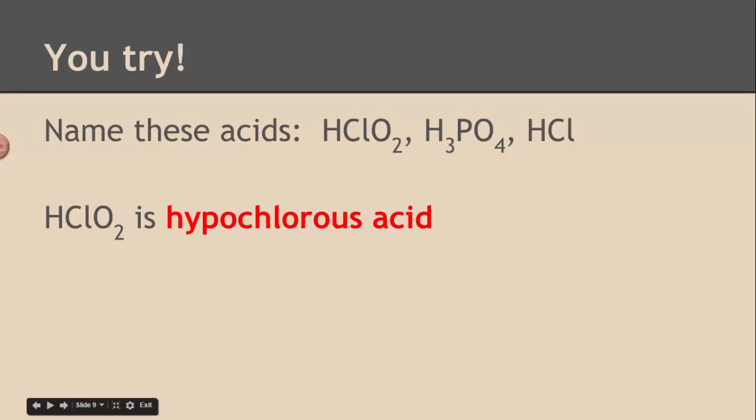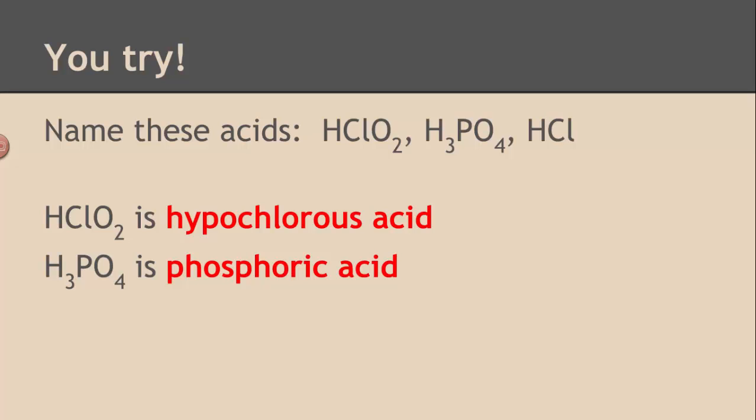HClO2 is called hypochlorous acid, because the ClO2- ion is the hypochlorite ion. H3PO4 is called phosphoric acid. Now, phosphic is what you might have, and that's okay, but remember phosphorus and sulfur, sometimes those letters come back. This is an example, phosphoric acid. HCl is called hydrochloric acid, because the anion is chloride.